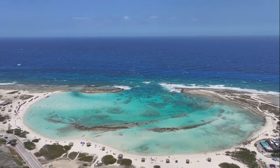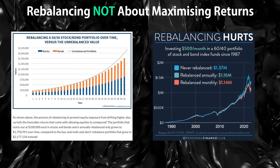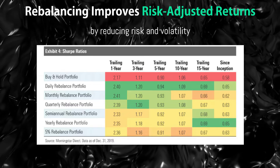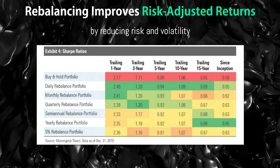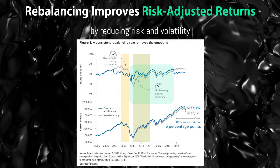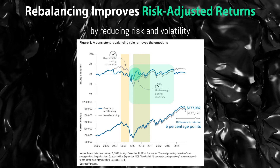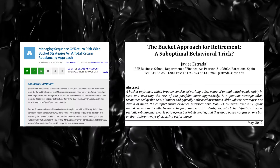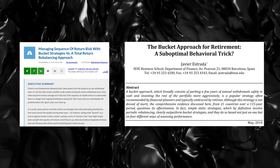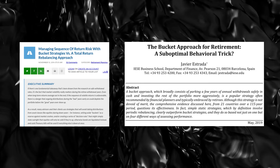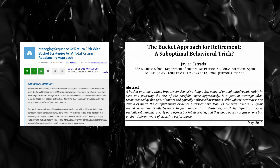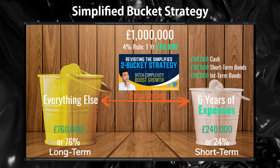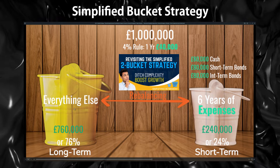Let's wrap up. Rebalancing isn't about absolute returns — in fact, it will likely result in lower absolute returns compared to a buy-and-hold strategy. Instead, rebalancing focuses on improving risk-adjusted returns by minimizing concentration risk and portfolio volatility. There is also an opportunistic element in down markets, where rebalancing allows you to buy equities at depressed prices. In their independent analyses, Michael Kitces and Javier Estrada both found that portfolio rebalancing was the secret sauce that significantly enhanced returns in retirement when using the three-bucket strategy. I'll provide links to their articles, as well as to the simplified bucket strategy I discuss in another video — a straightforward six-year, two-bucket strategy designed to offer peace of mind without the unnecessary complexity of the three-bucket strategy.